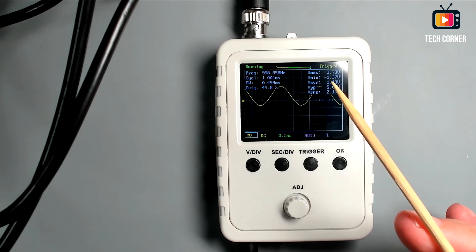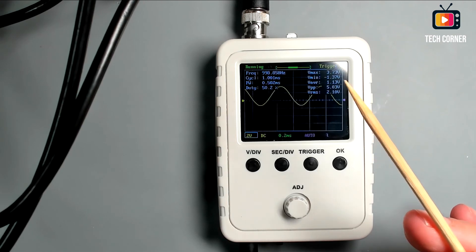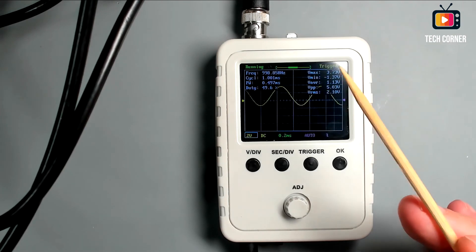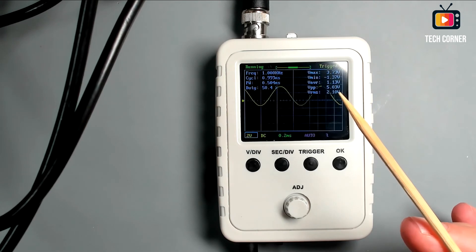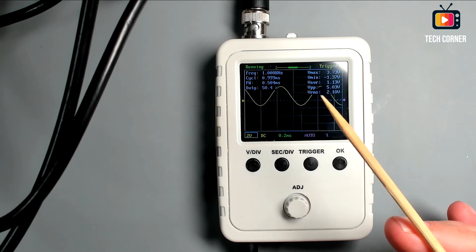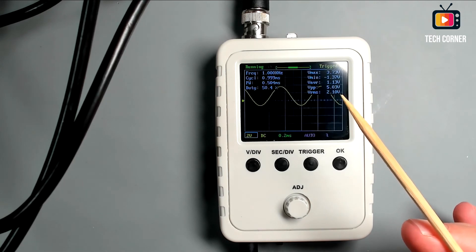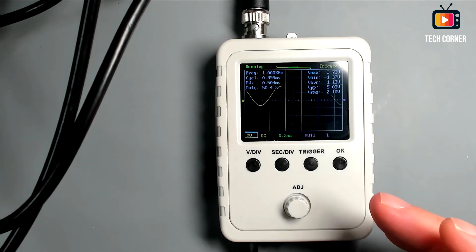So here we have the Vmax, Vmin, the average voltage, the voltage peak to peak and the voltage RMS. The RMS voltage is 2.10 volts.